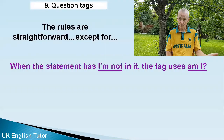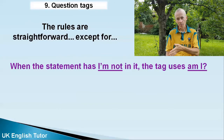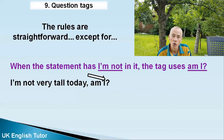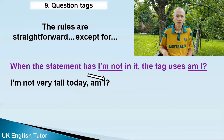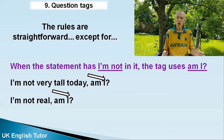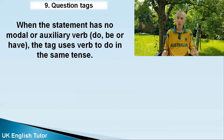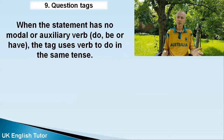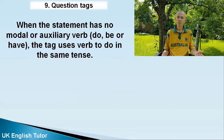When the statement contains 'I'm not,' the tag contains 'am I': 'I'm not very tall today, am I?' 'I'm not real, am I?' When there's no modal verb or auxiliary verb — 'do,' 'be,' or 'have' — in the statement, and the verb is something like run, sit, eat, play, jump, the tag doesn't use that verb; you use the verb 'to do.'